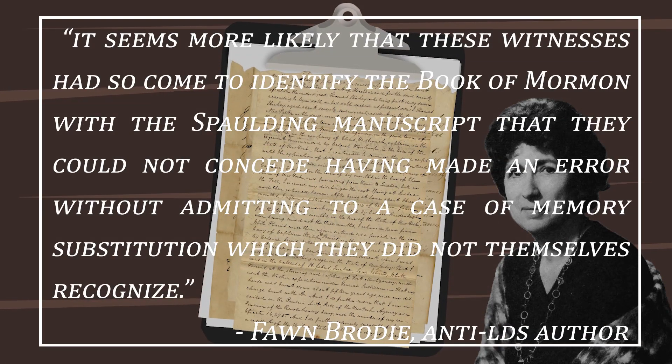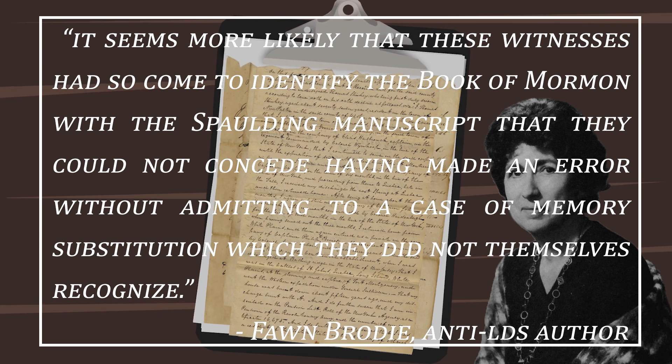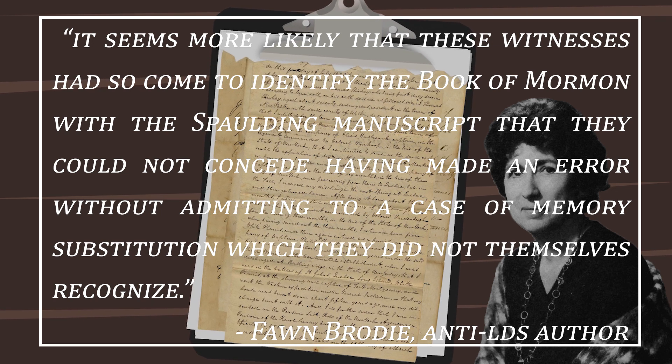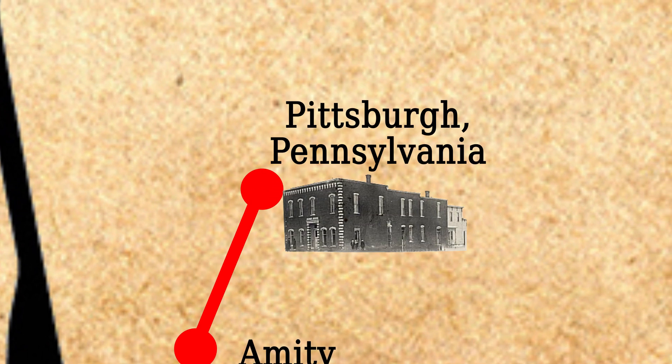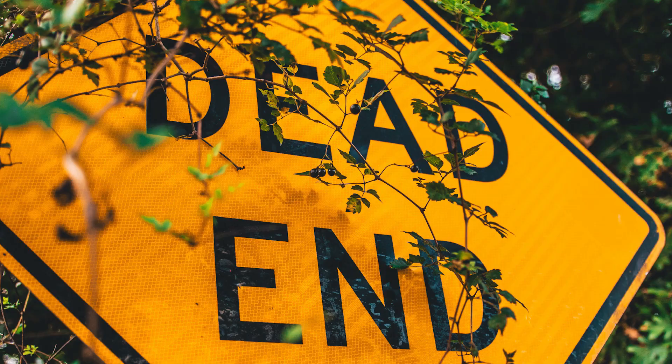Brody, who remember is a critic of the church, said it seems more likely that these witnesses had so come to identify the Book of Mormon with the Spalding manuscript that they could not concede having made an error without admitting to a case of memory substitution which they did not themselves recognize. So Hurlbut continued his search. Spalding's widow said Spalding took 'Manuscript Found' to a publisher in Pittsburgh — the office of Patterson and Lambden. But as it turns out, Patterson and Lambden didn't exist until two years after Spalding's death, so Hurlbut found no manuscript there and hit a dead end.